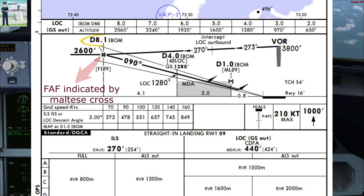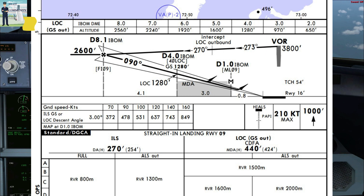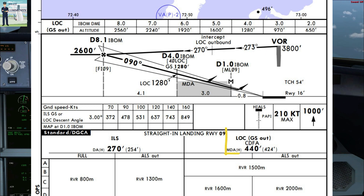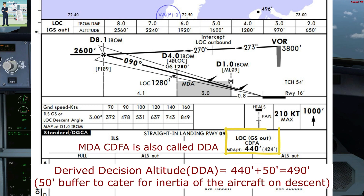In case of glide slope out, our final approach fix will be at 8.1 ILS DME and we shall be descending as per the glide slope out table until our MDA CDFA of 440 plus 50 feet, which is 490 feet.